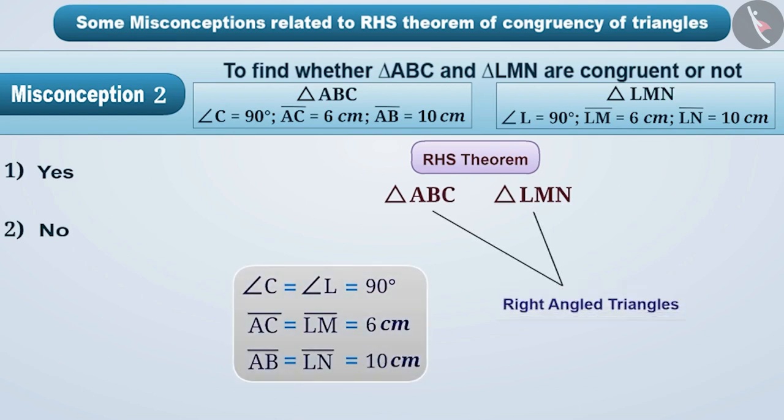Realizing that both triangles are right-angled triangles and their two sides are equal, they assume that both triangles are congruent under the RHS Theorem and from this understanding, they select option 1. But it is a wrong answer.